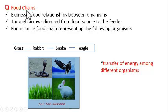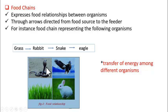Good morning students. Today we shall understand about food chains and food webs. In the environment, there is no single organism which can survive independently. It has to depend on other organisms for its food and survival.